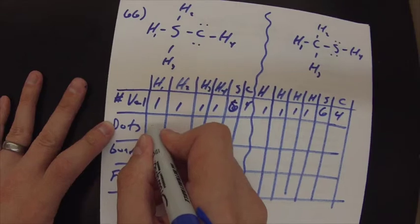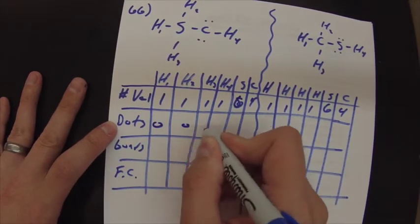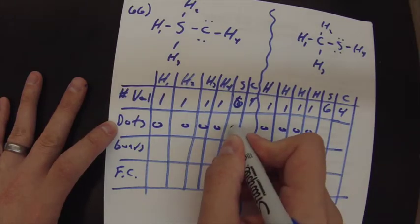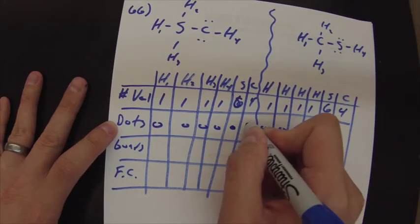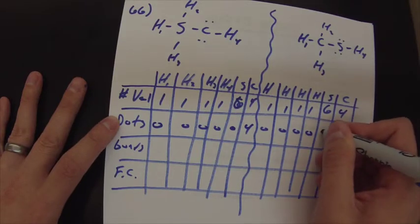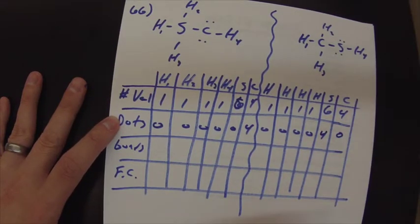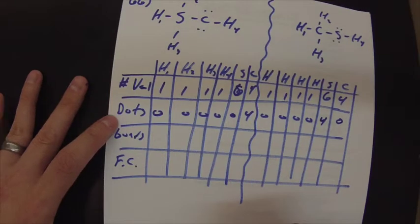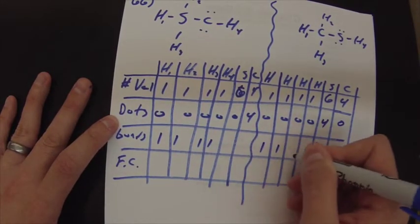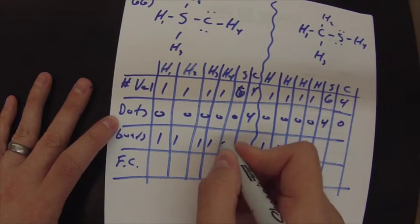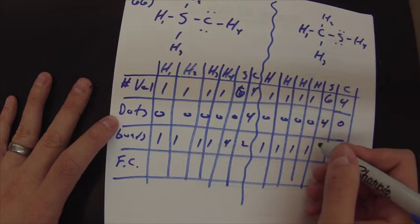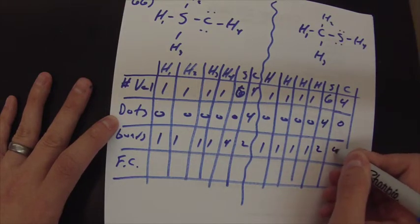Now, none of your hydrogens have any dots on them, which is a good sign. Over here, your sulfur also has zero, and your carbon has four. And so over here, your sulfur has four, and your carbon has zero. Now if we look at bonds, all of your hydrogens have one. Over here, your sulfur has four, and your carbon has two. And over here, your sulfur has two, and your carbon has four.